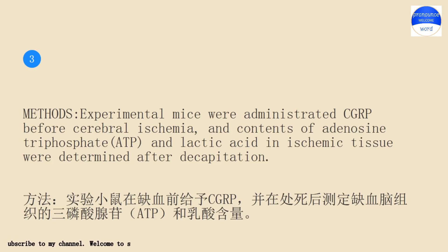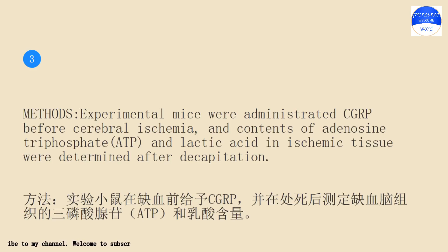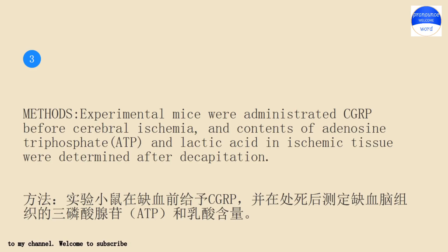Methods: experimental mice were administered CGRP before cerebral ischemia, and contents of adenosine triphosphate and lactic acid in ischemic tissue were determined after decapitation.